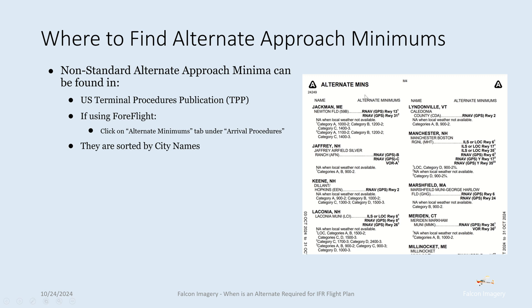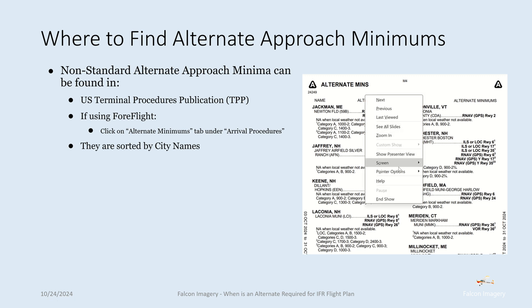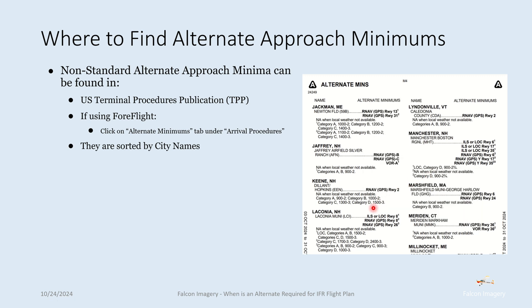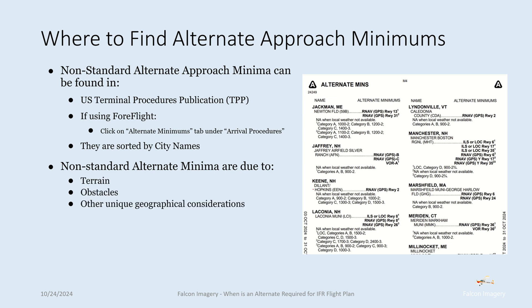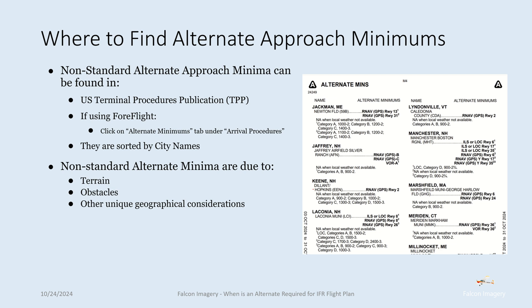In this case here, if I enable my pointer, we can see for Laconia Airport, for using the localizer or ILS, for category A and B, we need 1,500 foot ceilings and two statute miles visibility, and so on and so forth for different categories of aircraft or different approaches for Laconia. Non-standard alternate minimums are due to a number of possible reasons: terrain, obstacles, or other unique geographical considerations for that airport and the particular approaches that are available.